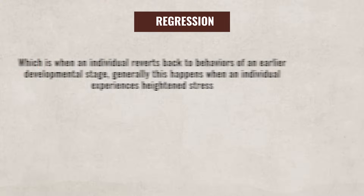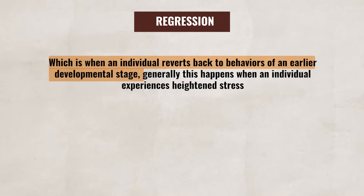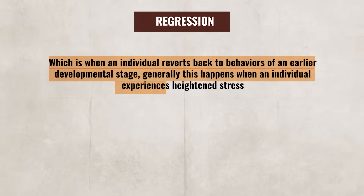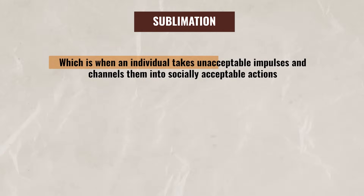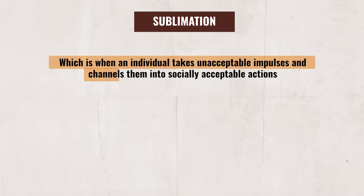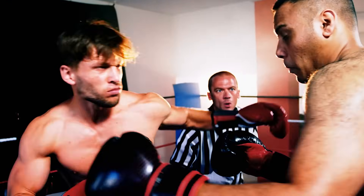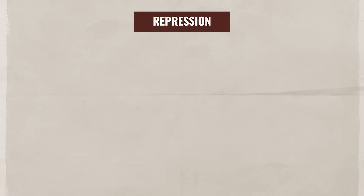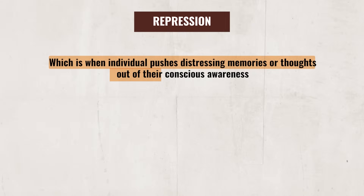Up next we have regression, which is when an individual reverts back to behaviors of an early developmental stage. Generally, this happens when an individual experiences heightened stress, like how finals week turns fully functioning students into blankets of burritos who just want snacks and cartoons. Then there is sublimation, which is when an individual takes an unacceptable impulse and channels it into socially acceptable action, such as taking your aggressive drives and channeling them into a sport. And lastly, there is repression, which is when an individual pushes distressing memories or thoughts out of their conscious awareness.